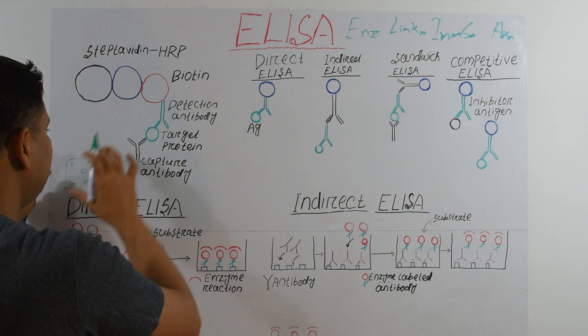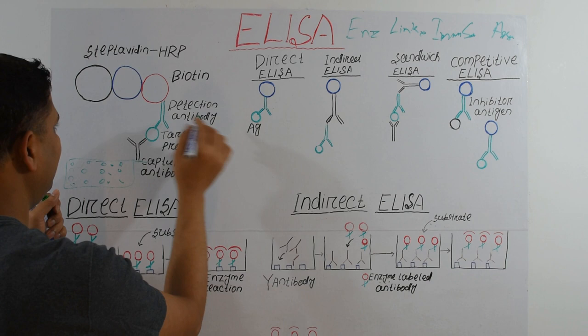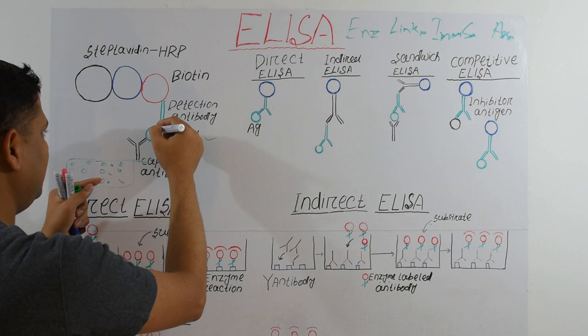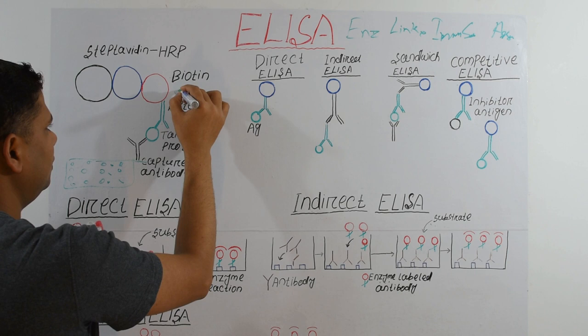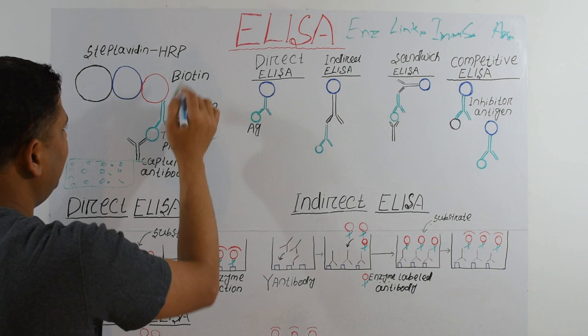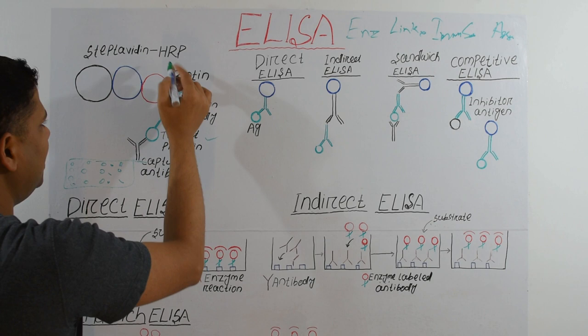To the surface we add our antigen, which is the target protein. To the target protein we add another antibody that will bind to the antigen. This detection antibody can be directly tagged to HRP, or through a secondary antibody. In one approach we use a biotin-tagged antibody.